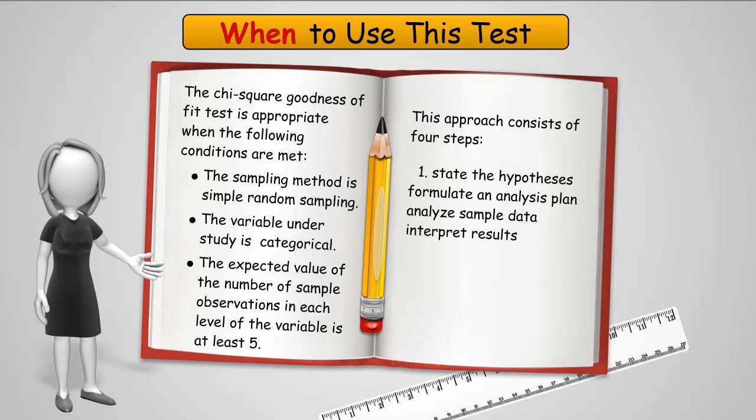The requirements for a chi-square test are pretty straightforward and simple. It has to be a random sample. The variable that you're looking at has to be categorical. The expected value of the number of the sample observations in each level is at least 5. This approach consists of the same four steps that we always do: we state the hypothesis, formulate an analysis plan, analyze the sample data, and determine and interpret the results.